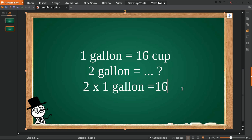But since we need to multiply it with 2 gallons, because we multiply 1 gallon with 2 in the left side, then we need to put 2 in the right side as well.